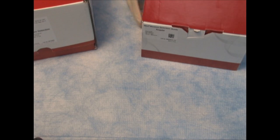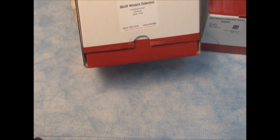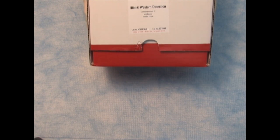So let's begin by unboxing the iBlot Western detection kit. The kit comes with two boxes. Here I have the stacks for performing the Western, and then I have a box containing the reagents. So let's see what we get in the reagent box.